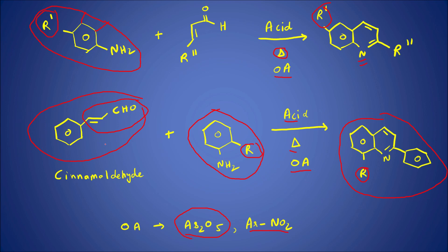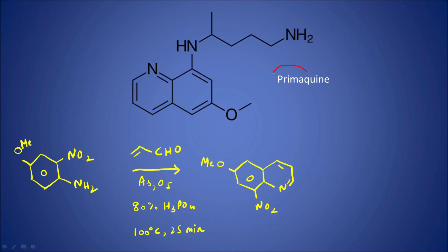The position of the R group also depends on the cinnamaldehyde. The benzene ring in cinnamaldehyde is near to the double bond. Had that benzene ring been positioned differently, it would appear at the third position of the quinoline. Things will get clearer when we look at the mechanism. We can have different kinds of quinoline derivatives, which is why this is a very useful reaction.